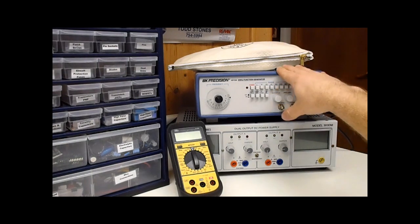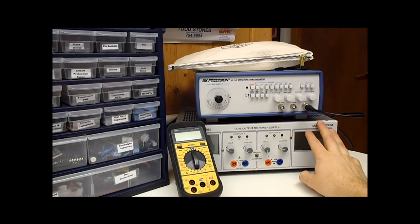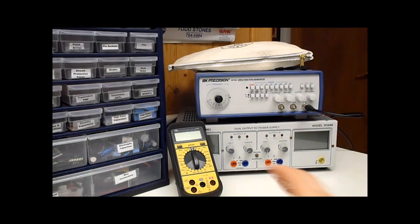So right here I have my BK Precision 2 MHz function generator. Underneath that I got my dual channel power supply which is 30 volts up to 3 amps. One of my multimeters.